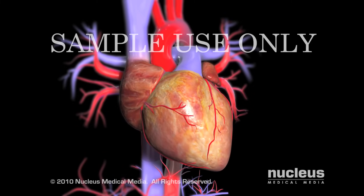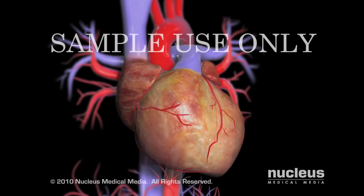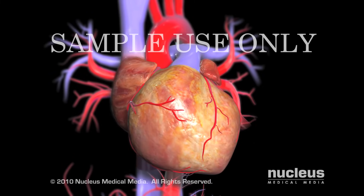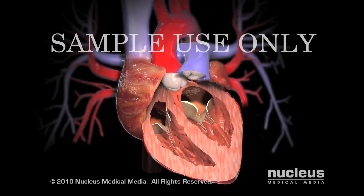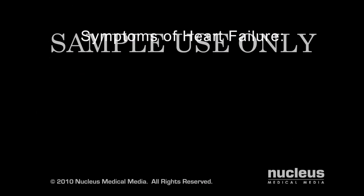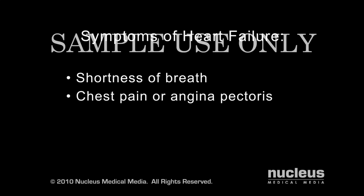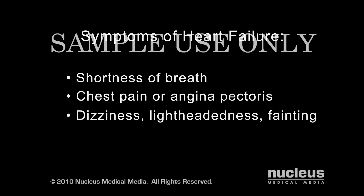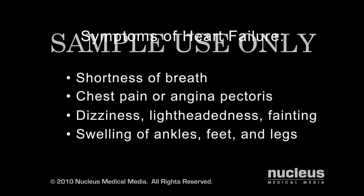After a period of time, a faulty aortic valve can cause the heart muscles to become enlarged and weakened. Depending on the nature of the valve's defect, the walls of the left ventricle may become abnormally thick or thin, and the problem can eventually affect the right side of the heart as well. Patients with this condition, known as heart failure, may experience shortness of breath, chest pain or angina pectoris, dizziness, lightheadedness, fainting, swelling of the ankles, feet, and legs, and fatigue.